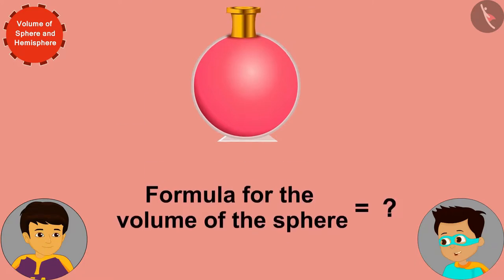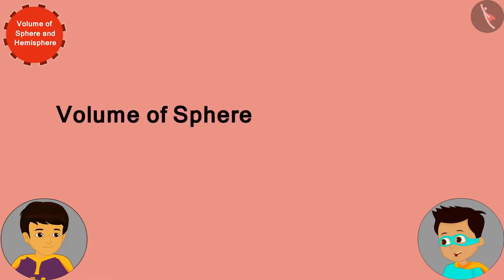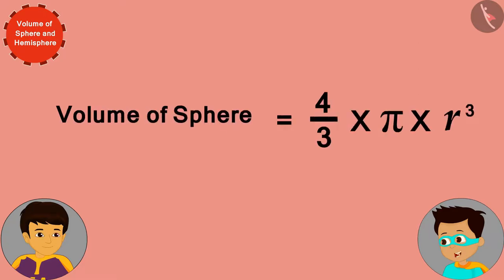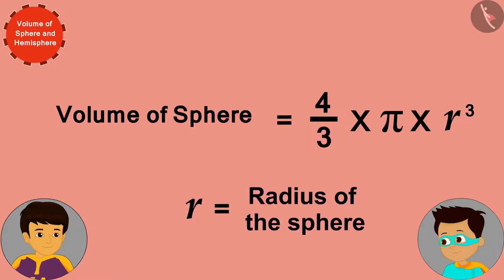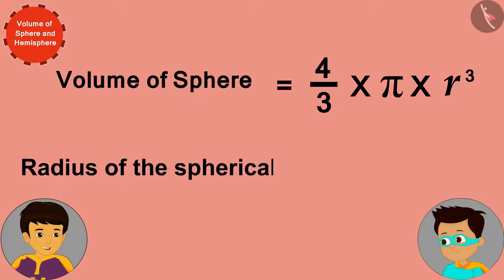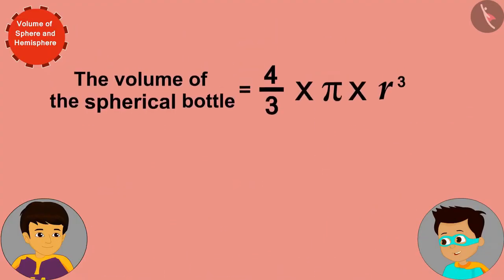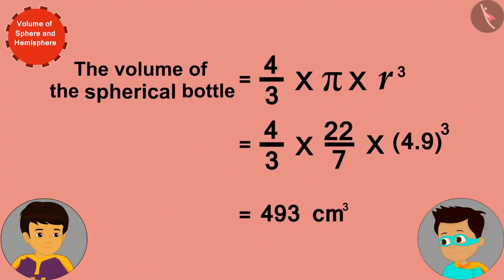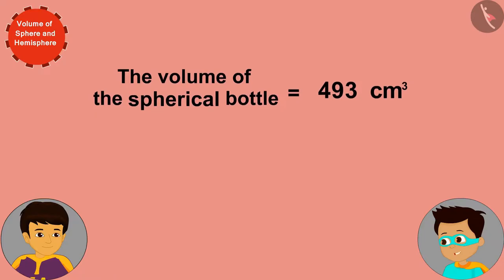The volume of a sphere is equal to (4/3)πr³, where r is the radius of the sphere. Well done, Thomas! Now to solve this, just replace r in this formula with the radius of the spherical bottle: 4.9 centimeters. The volume of the spherical bottle is 493 cubic centimeters.